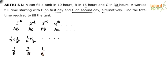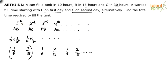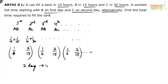On the third day it's 1/6 again, fourth day 2/15, fifth day 1/6, and so on. This pattern continues until the entire work is done. The work repeats after every two days, so let's find how much work is done in two days: 1/6 + 2/15.